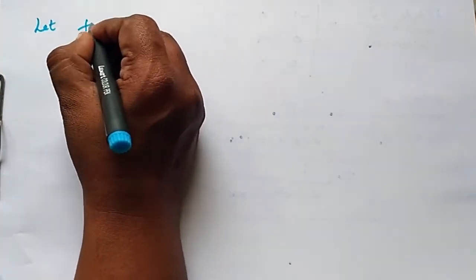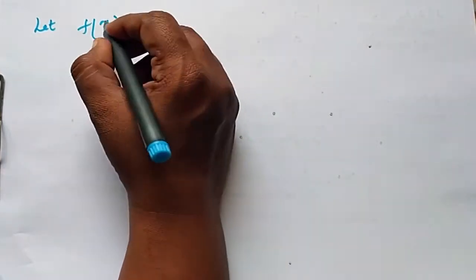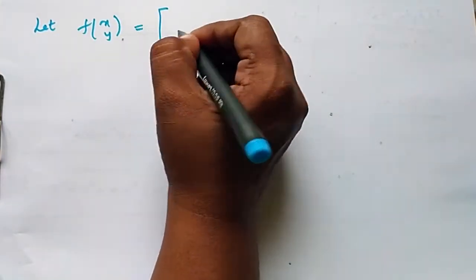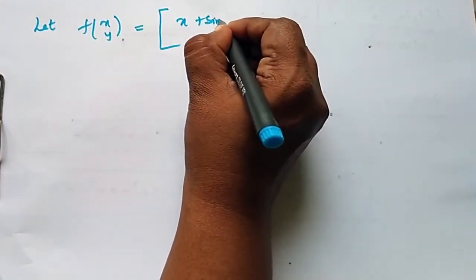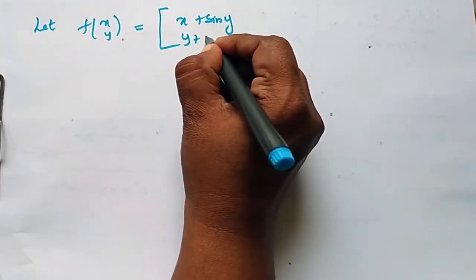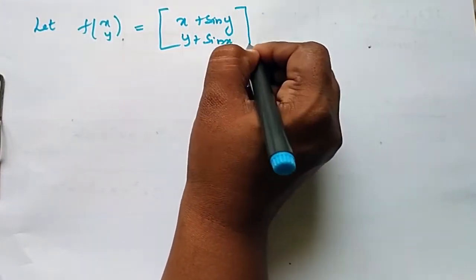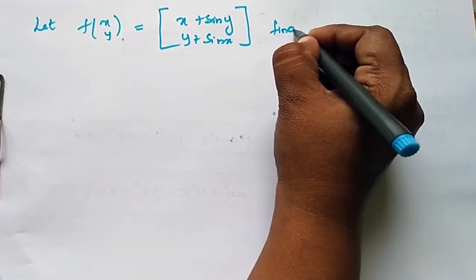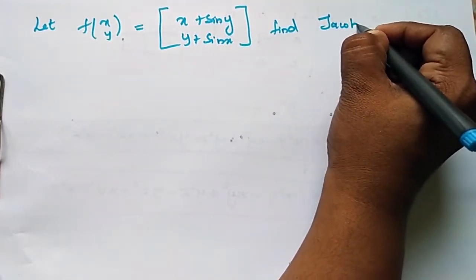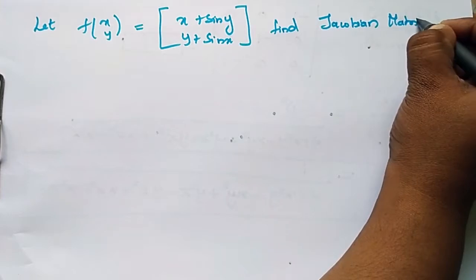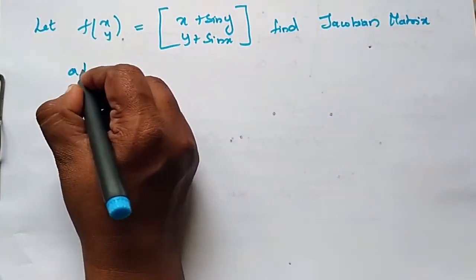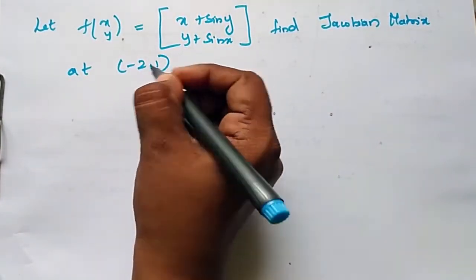Let f(x, y) = [x + sin(y), y + sin(x)]. Find the Jacobian matrix at (-2, 1).